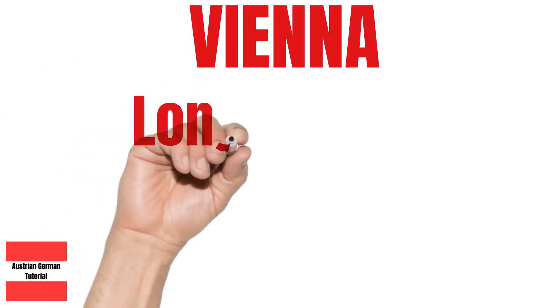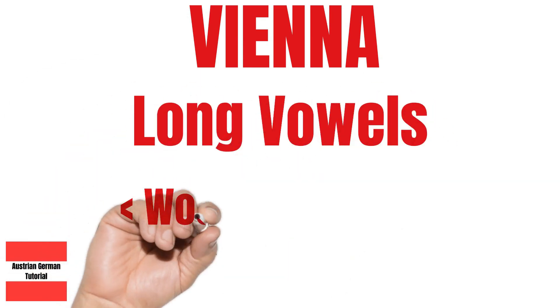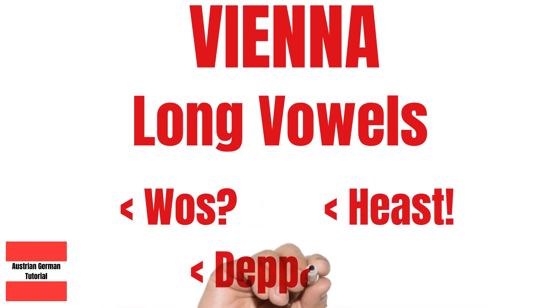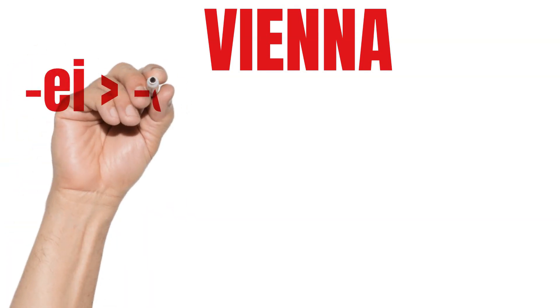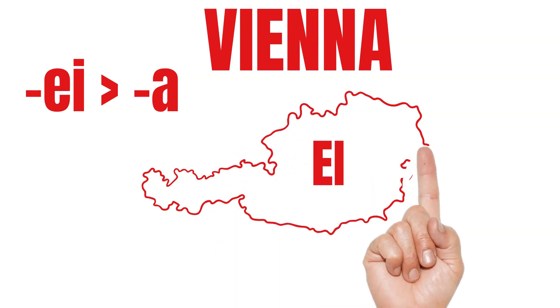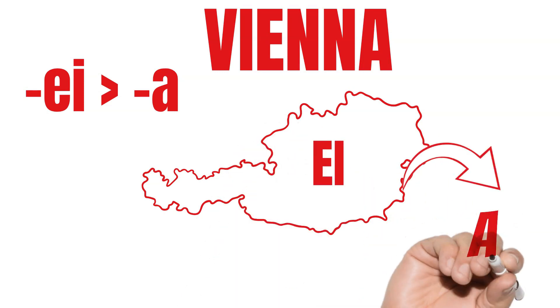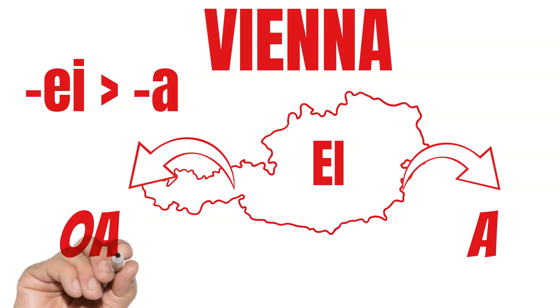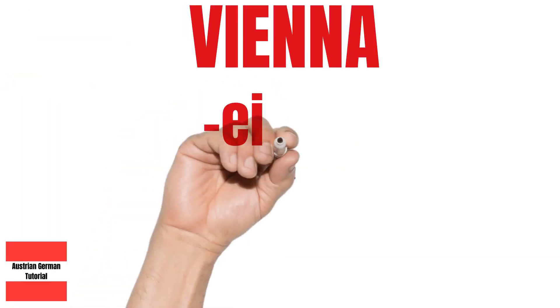In Vienna, many people like using long vowels. For example: Wurst, Erst, Deport. Besides, I becomes A. If we take a look at the Austrian map, we can see that in the eastern parts people say A for I, and in the western parts Austrians tend to use OR instead of A.